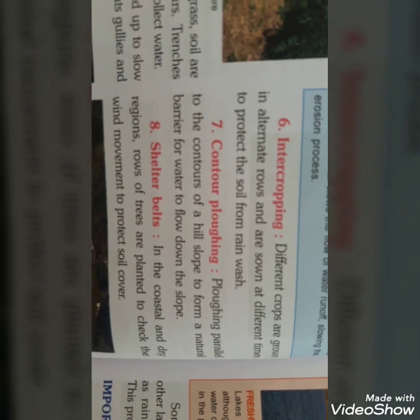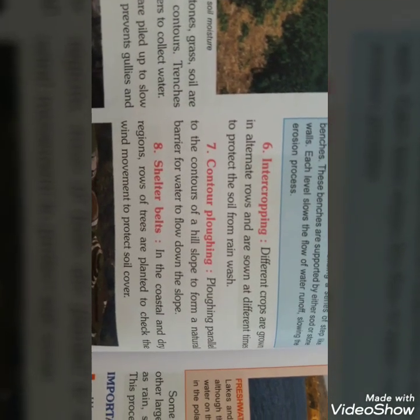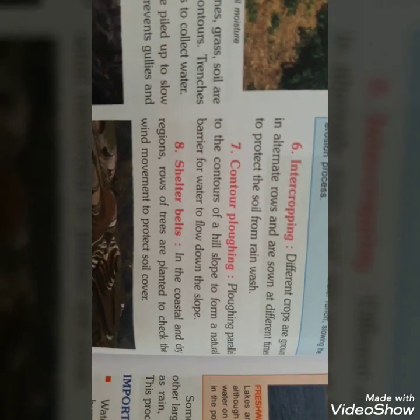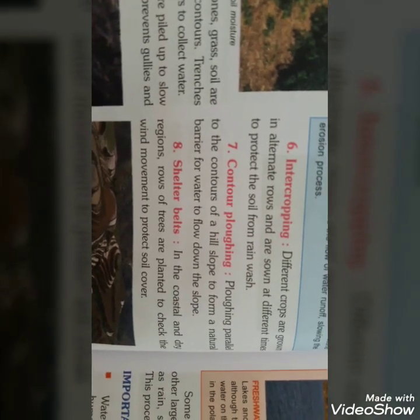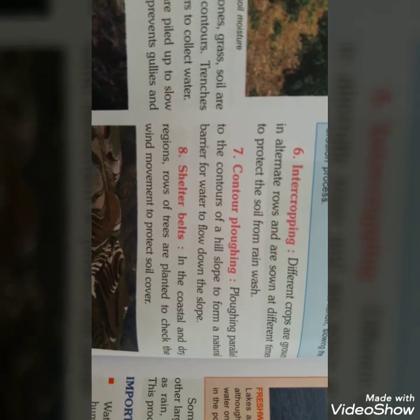Counter ploughing — ploughing parallel to the contour of a hill slope to form a natural barrier for water to flow down the slope. जब भी ploughing मतलब खुदाई करते हैं, तब एक counter नाला बना देना चाहिए, जिसमें अगर बारिश हो तो पानी वहाँ से निकल जाए। Shelter belts — in coastal and dry regions, rows of trees are planted to check wind movement to protect soil cover।